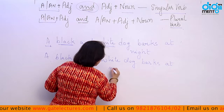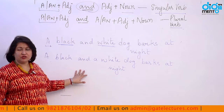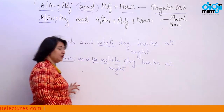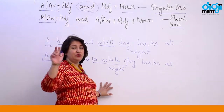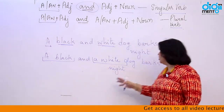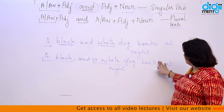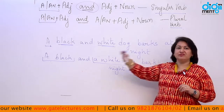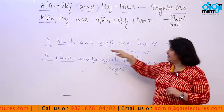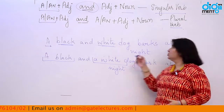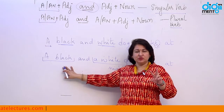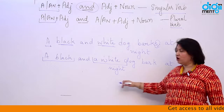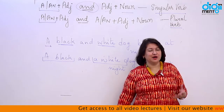But if I say 'a black and a white dog bark at night,' it means I am talking about two different dogs — one black dog and one white dog. So there are two subjects. With two subjects the verb becomes plural: 'bark' instead of 'barks.' With a singular subject the verb is singular, and with a plural subject the verb is plural.